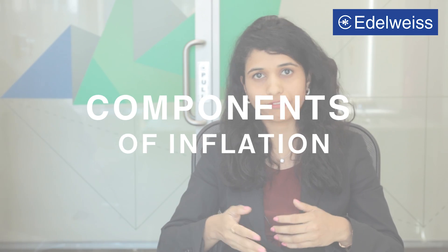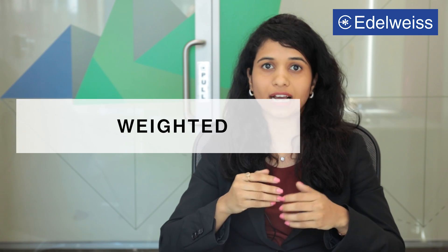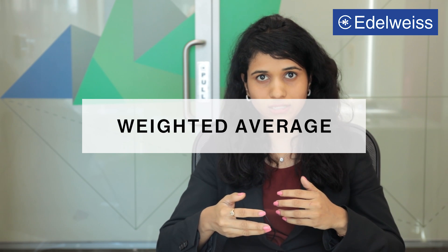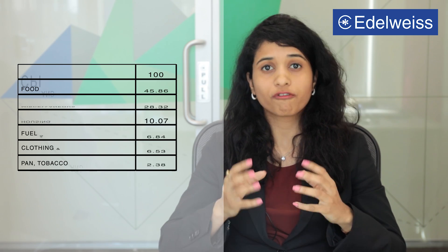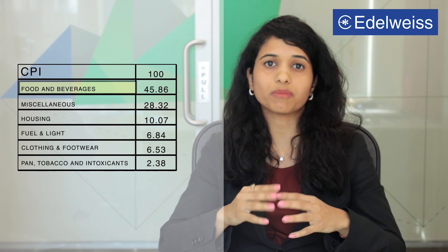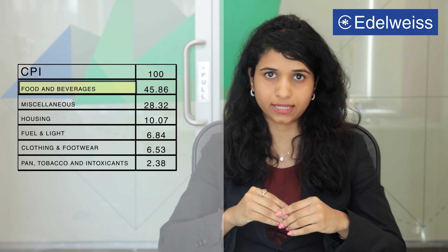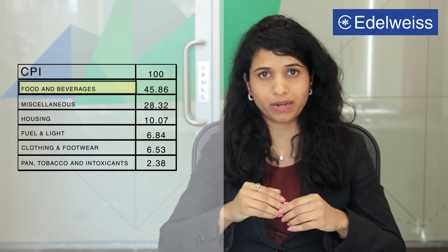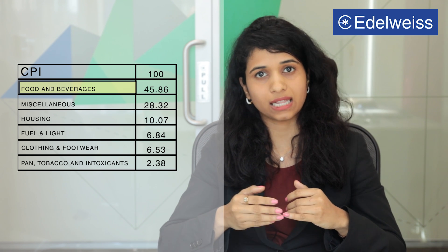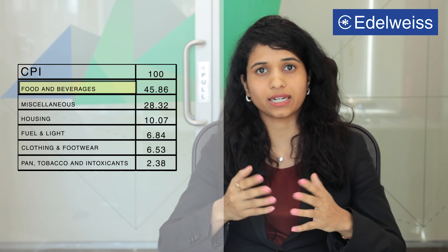Now let us better understand the components of inflation and core inflation. The price of 100 is an index of actual prices, measured as a weighted average of different commodities. If you consider a consumption basket of an Indian consumer, food will take up most of the space. Hence, it has the highest weight in the Consumer Price Index. This is followed by miscellaneous, which includes health, education, and other expenses.